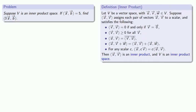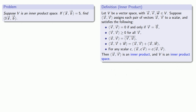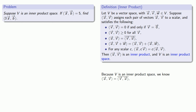Since V is an inner product space, we might consider the inner product of cu and v, but we don't know what happens when the first vector is multiplied by a scalar — that rule applies to the second argument. So we try something else. Because V is an inner product space, we know the inner product of u and v is the conjugate of the inner product of v and u. So the inner product of b and a is the conjugate of the inner product of a and b.